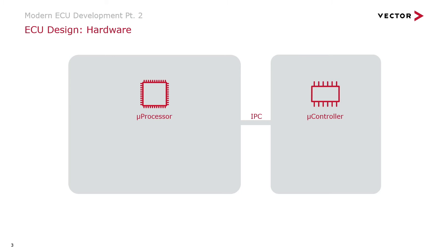Let's start with the general architecture of these ECUs. There are two different parts inside: a microcontroller side and a microprocessor side. You always need both because they have inherently different properties. Starting with the microcontroller: these are typically less powerful, but they have much better real-time performance — a much smaller jitter and faster reaction to inputs and outputs. These types of controllers are also easier to verify and therefore have a higher ASIL rating, making it much easier to place safety-related software on them.